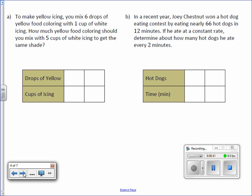To make yellow icing, you mix 6 drops of yellow food coloring with 1 cup of white icing. How much yellow food coloring should you mix with 5 cups of white icing to get the same shade? We're going to take the information we have and fill it into the first column of the chart. We have 6 drops of yellow food coloring and 1 cup of icing.